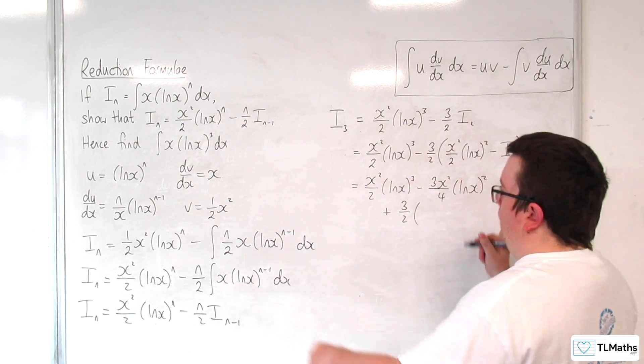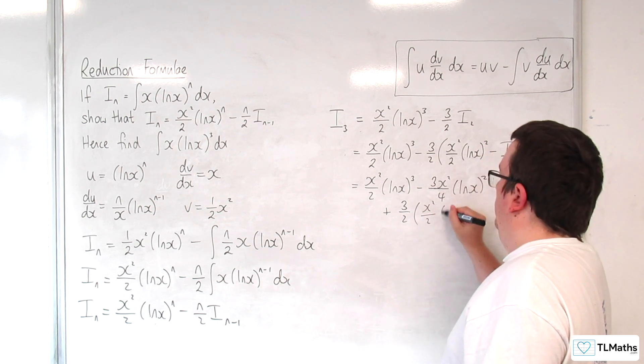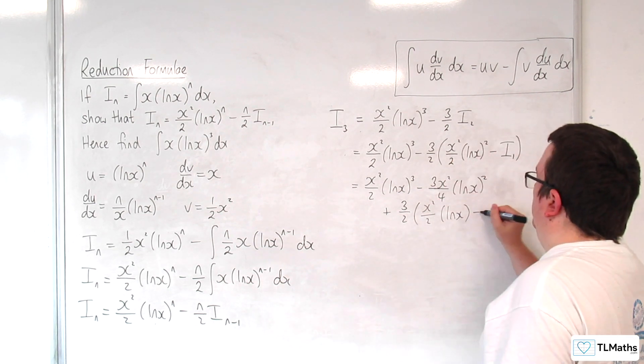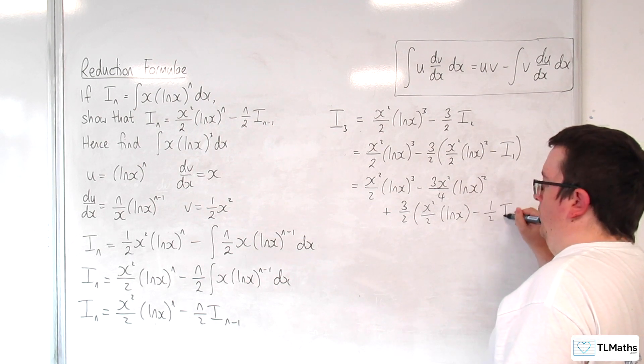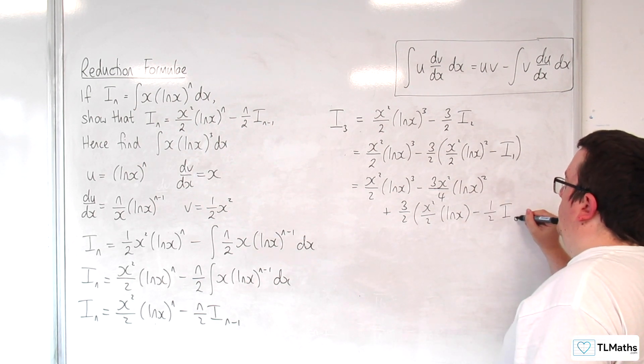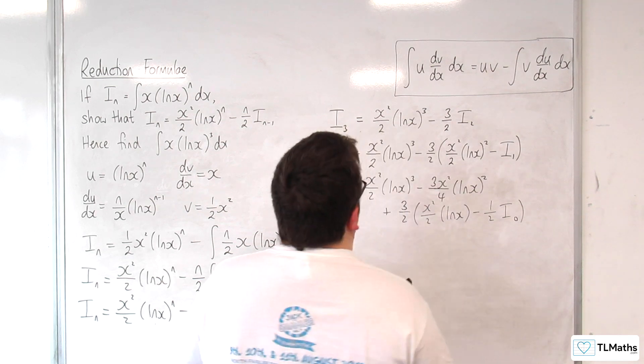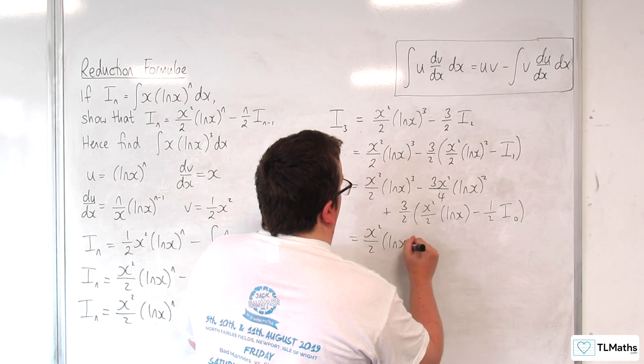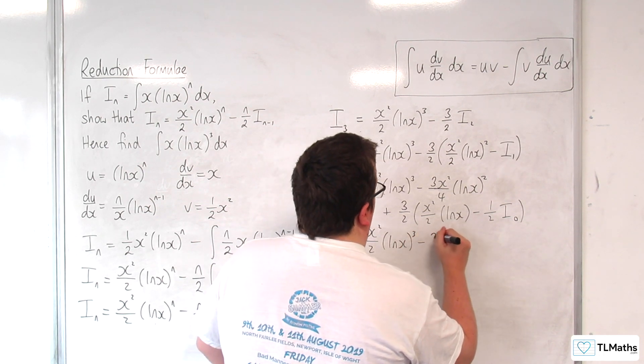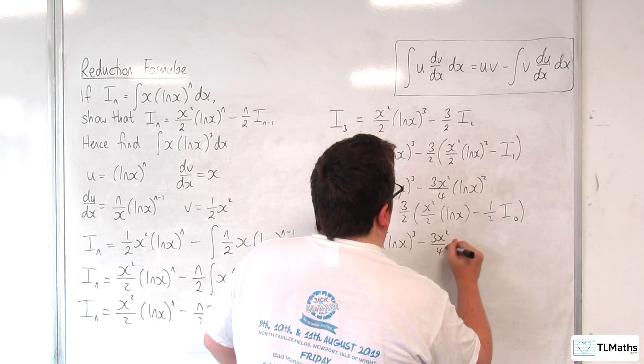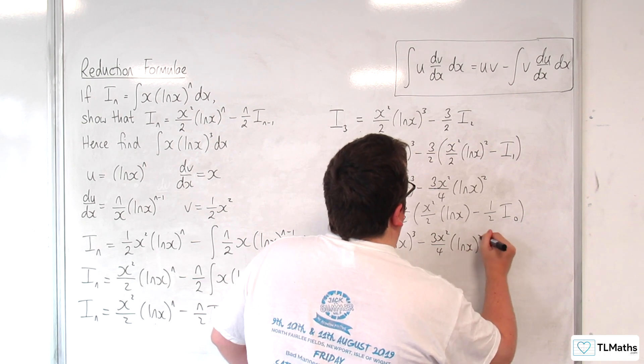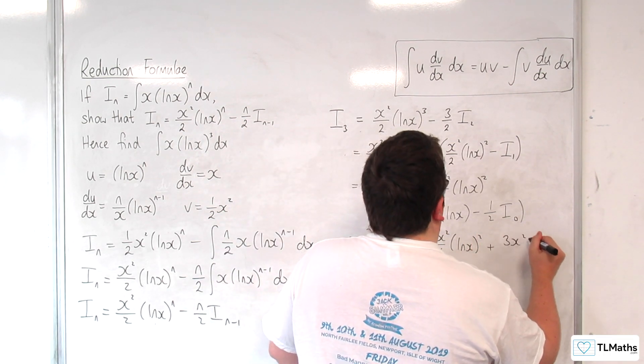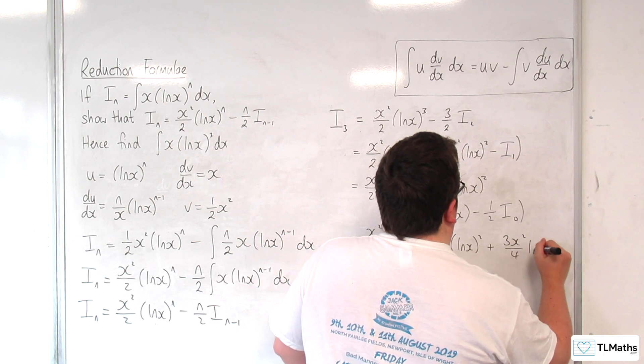So we're going to have x squared over 2, log of x, take away 3x squared over 4, log of x squared, plus 3x squared over 4, log of x,